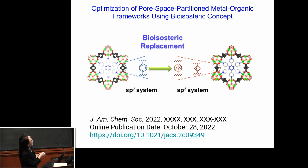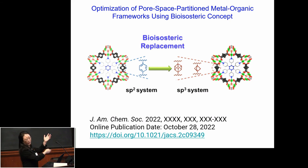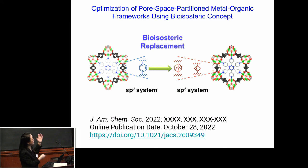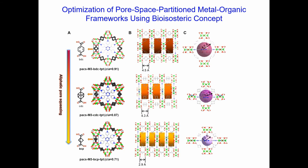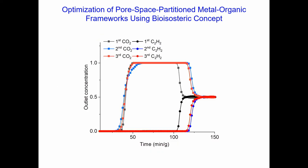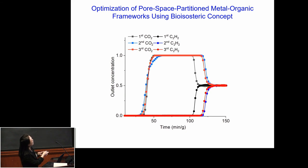Recently, we used a bioisosteric replacement strategy — well known in medicinal chemistry — replacing the benzene ring with different aliphatic groups. We replaced the phenyl group in our MOF material with different groups, giving us the opportunity to fine-tune the channel properties. This allows tuning the channel diameter from 4.6 Å to 4.3 Å to 2.9 Å depending on the ligand — a family of materials with different pore sizes. These materials show impressive adsorption uptake capacity for both CO2 and acetylene, and excellent separation performance.